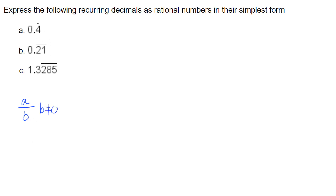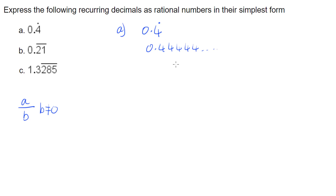We are trying to write recurring decimals as a fraction in simplest form. Starting with question a, which has 0.4 recurring — meaning 0.4444... continuing to an infinite number of fours. To represent this as a fraction, we need to do some mathematics to get integers by getting rid of decimal places using multiplication and subtraction. If we subtract a number which has the same decimal places, all of those decimal places will cancel out.